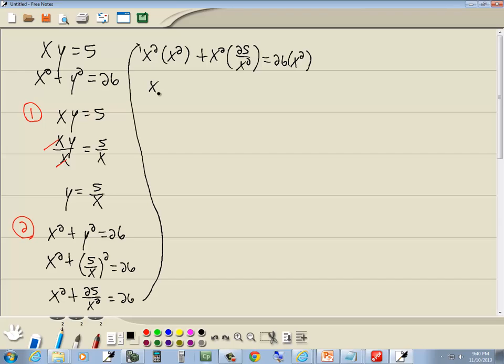x squared times x squared gives us x to the fourth. Here, these x squareds are going to cancel. So we've got plus 25 equals 26 times x squared is 26x squared. Now we want to get everything over one side, so I'll take 26x squared to the left side. So we've got x to the fourth minus 26x squared plus 25 equals 0.